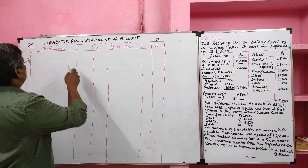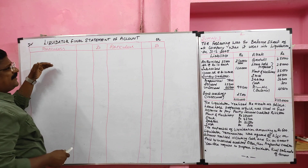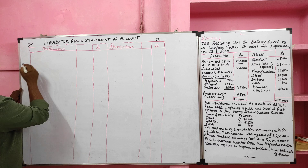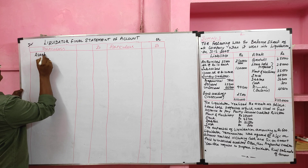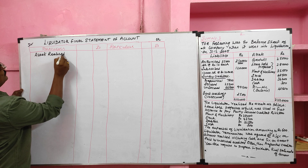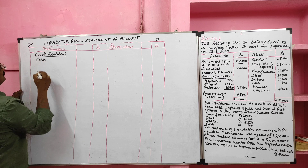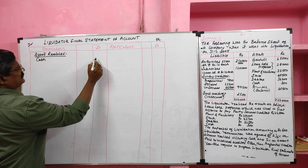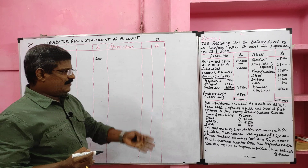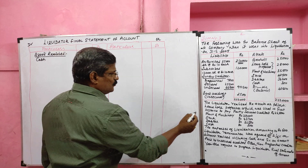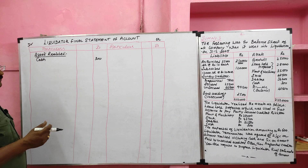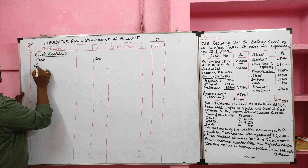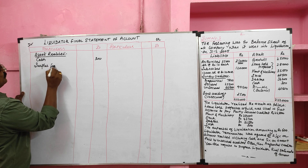The format of the liquidator's final statement of account has a debit side and a credit side. The debit side records cash receipts and the credit side records cash payments. We start with assets realized on the debit side. Cash from the balance sheet is recorded first — cash value is rupees 300. For leasehold property, since a fixed charge was created on it, we write 'surplus from securities'.